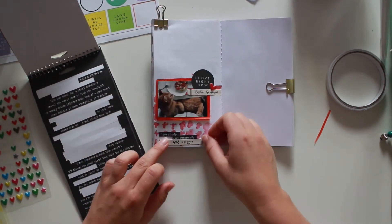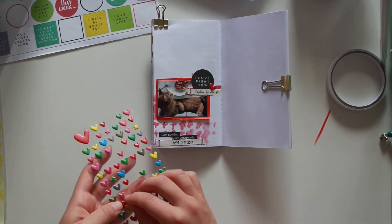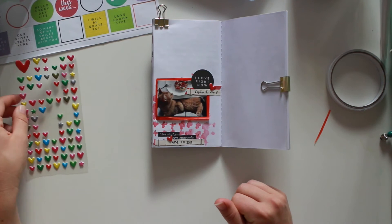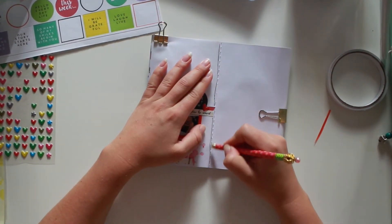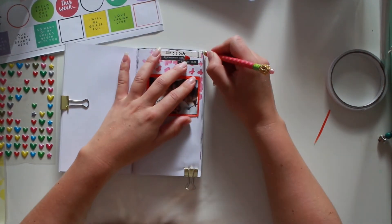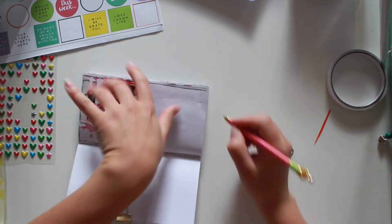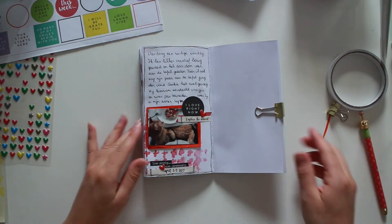And I'm using those sort of puffy stickers. They're not really puffy. They're like a kind of foam. But I used those on the layout too. And of course I do my doodly border around the edges. Here you see me do that. And then I'm gonna write my journaling. There it is.